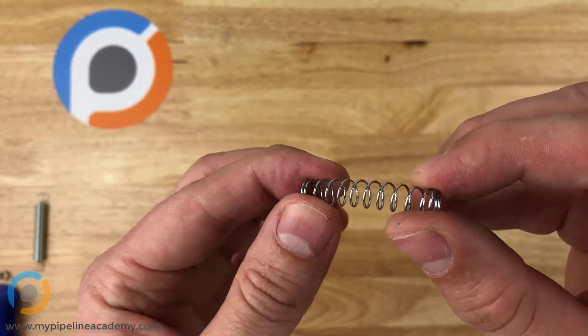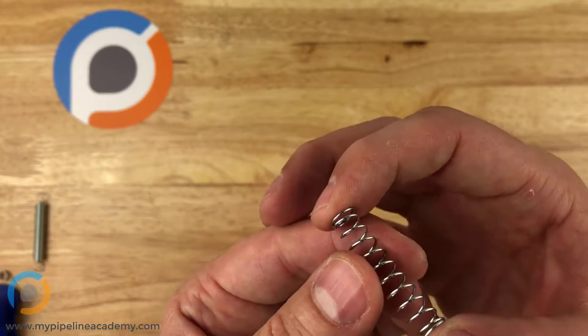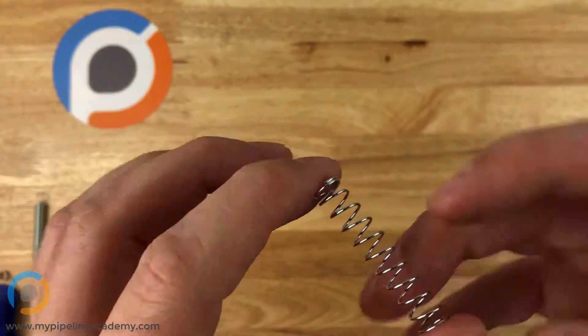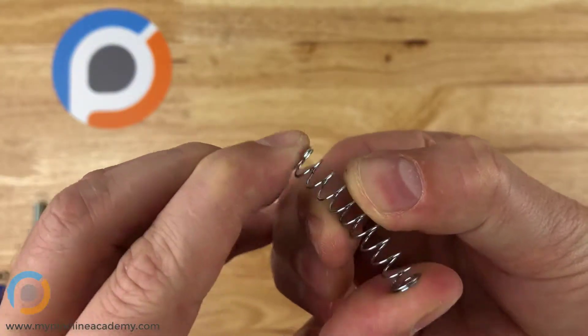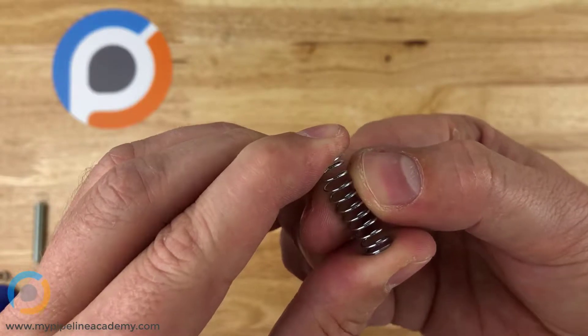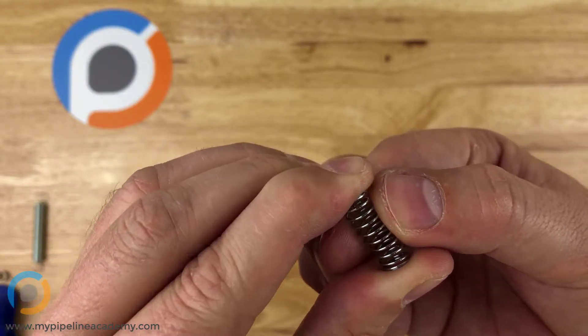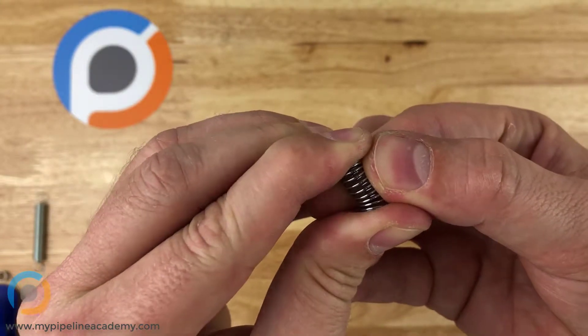Now these springs have what's called a spring constant. And that spring constant will allow you to very simply calculate at what amount of compression you reach a certain amount of force. So if I compress this half an inch, how much force am I getting back out? How much force is the spring pushing on my fingers with? If I go a full inch now, how much force is the spring pushing on my fingers with?